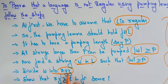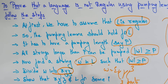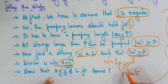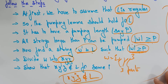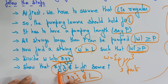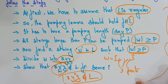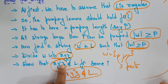After finding the string, you divide it into X, Y, Z. Now show that X Y^K Z does not belong to the language for some value of K, where K is greater than or equal to 0. If this condition holds, you have proved that the given language is not regular. If it belongs to the language, then it is obviously regular — but we need to show it is not regular, so this condition has to be followed.